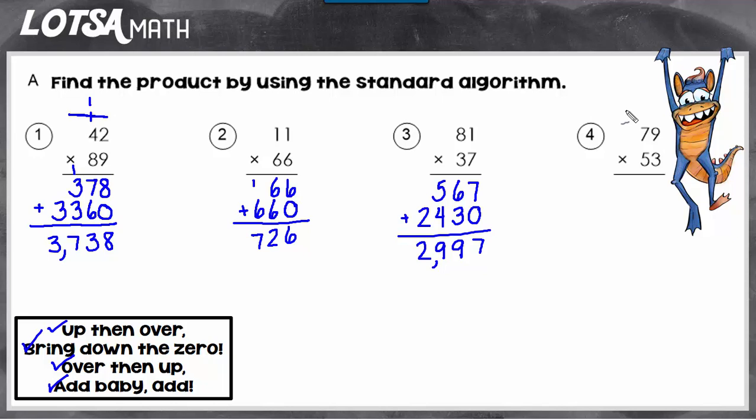We'll look at one more. So we're going to start here with the 3, and we're going to go up, then over. So up, 3 times 9 is 27. So I'm going to write the 7 and carry the 2. And then I'm going to go over. So 3 times 7 is 21, plus 2 is 23. So I've done up and over.